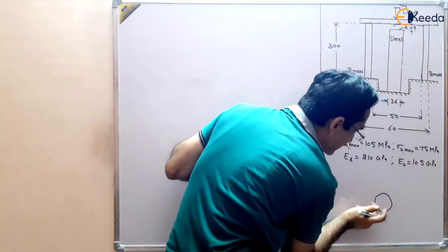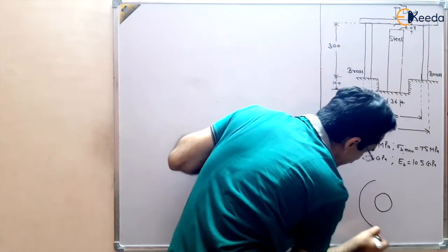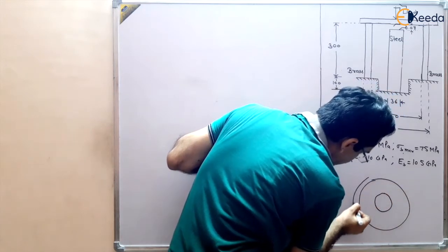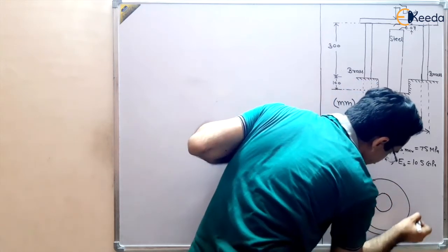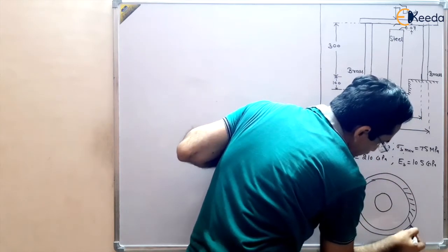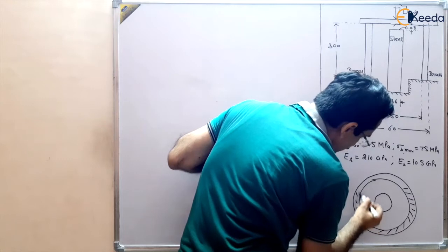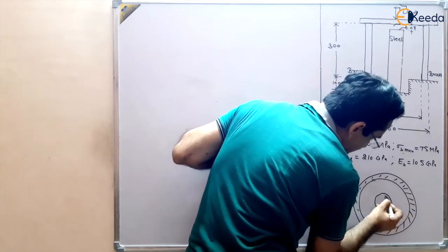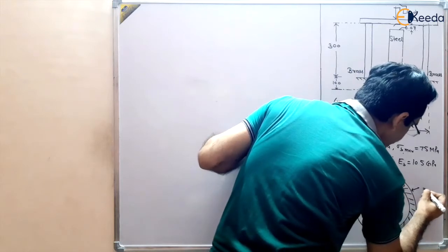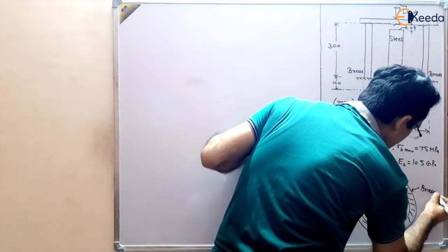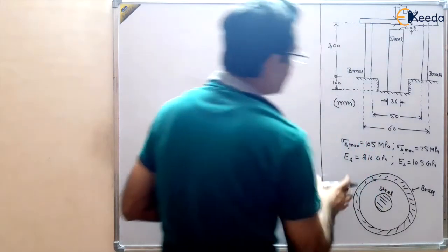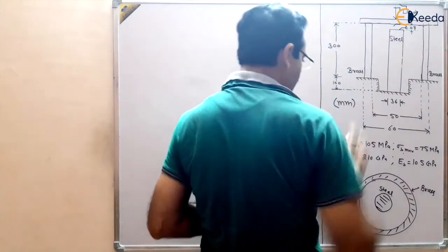At the center there is steel and it is surrounded by a brass tube. This is the composite section: the brass tube on the outside and the steel rod at the center.